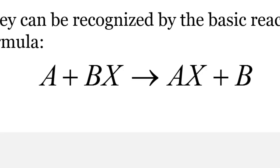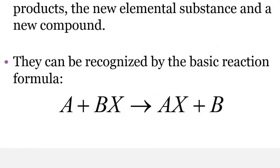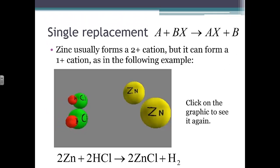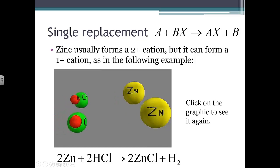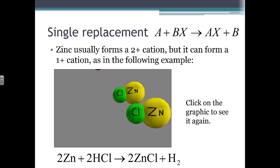Decomposition does the exact opposite of synthesis. It involves one reactant breaking down to form two or more products, and can be recognized by the basic reaction formula: AB → A + B. You start with one compound and it breaks down into two different simpler substances. Those simpler substances could be elemental, could be compounds themselves, or a combination of the two.